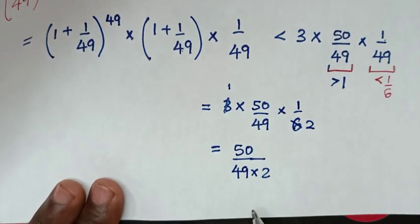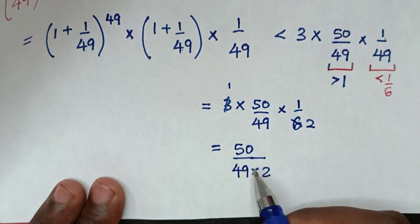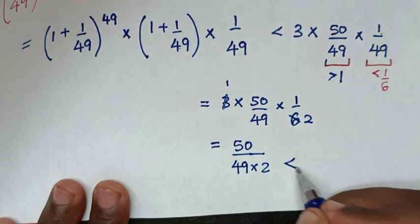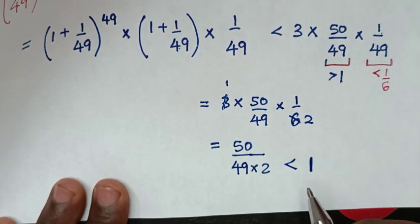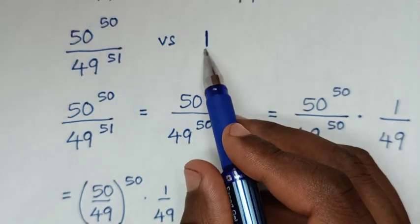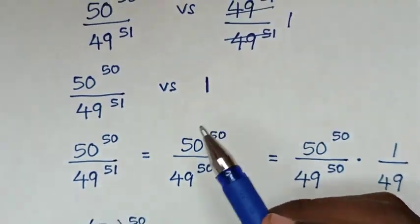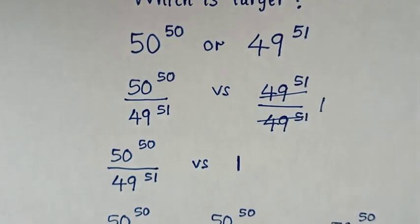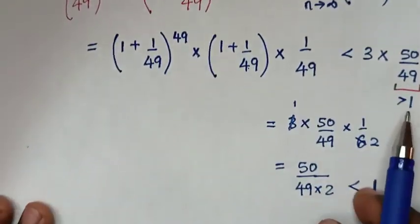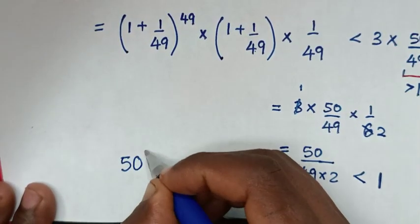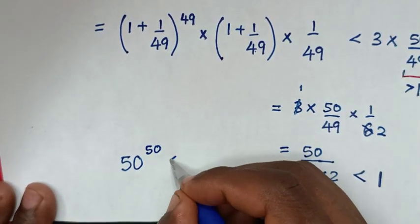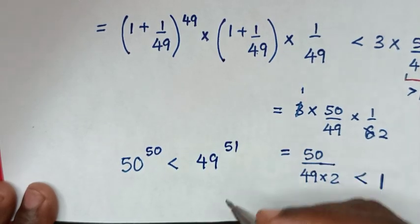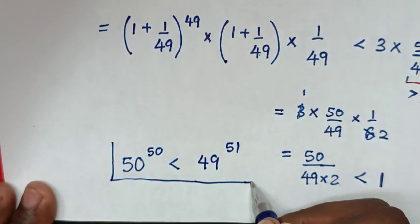Now here the denominator is greater than the numerator, so this is less than 1. As we were comparing with 1, therefore this side is less than 1. Therefore the conclusion from our problem: 50 power 50 is less than 49 power 51. Therefore this is our final answer.